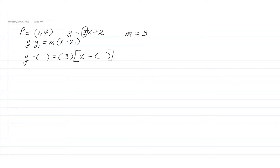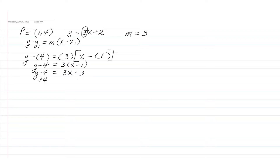The slope that we have is three. The x value of the point is one, and the y value is four. So we have y minus four equals three times x minus one. We distribute on the right-hand side and get three x minus three. Now we simply add four to both sides, and the line we're looking for has an equation of y equals three x plus one.